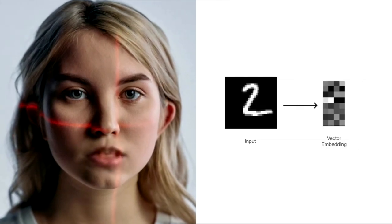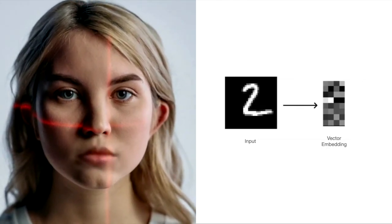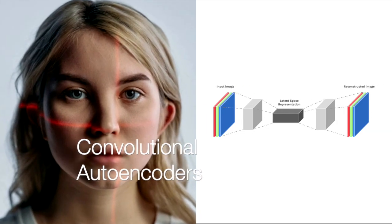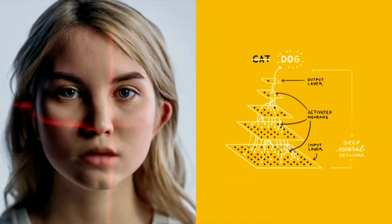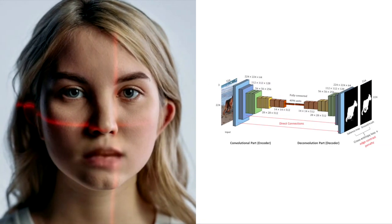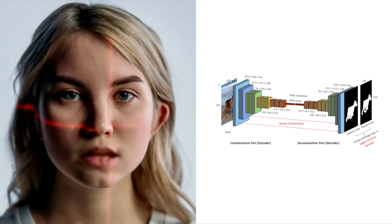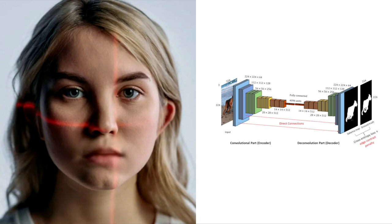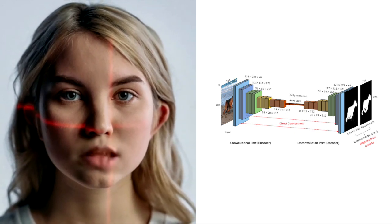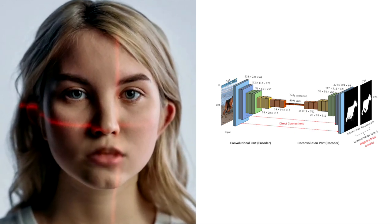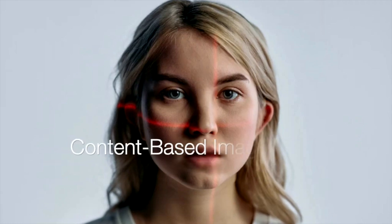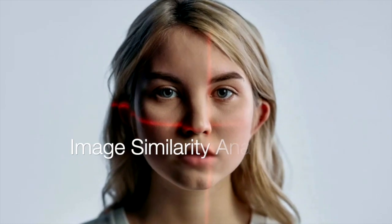This technique allows us to capture the essential features of the data in a condensed form. Moving on to image data, convolutional autoencoders come into play. Similar to regular autoencoders, these models leverage convolutional neural networks, or CNN, to encode and decode the images. The structure involves decreasing the number of CNN layers from the input side to the middle layer, and then increasing them back to the output side. By extracting the output from the middle layer, we obtain vector embeddings representing the essential characteristics of the images, useful for content-based image retrieval to image similarity analysis.